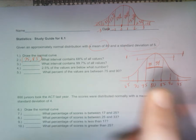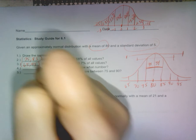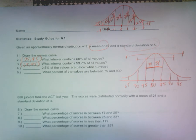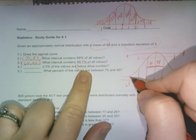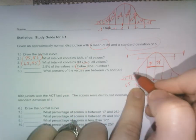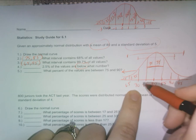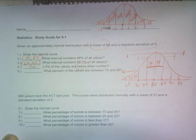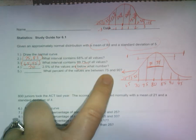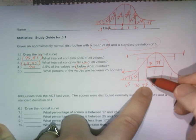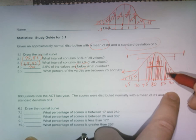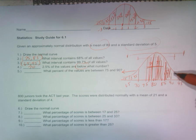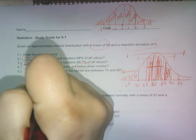2.5% of what values are below what number? 2.5%. This is 2.35, this is 0.15. I want to go below what number? 70. What percent of values are between 75 and 90? So I'm counting this, I'm counting this, and I'm counting this little piece which was how much again? 13.5. So 34, 34, and 13.5 make a total of 81.5%.